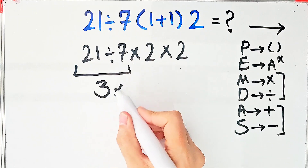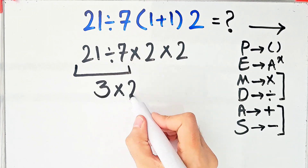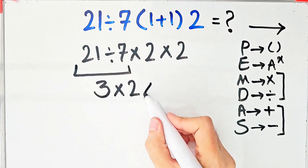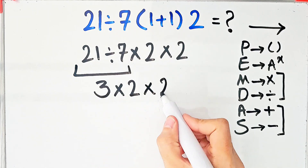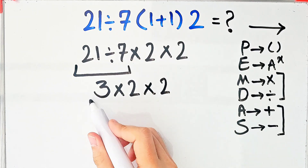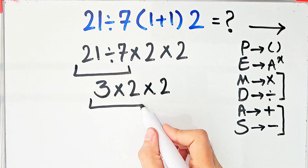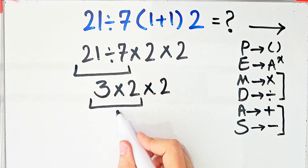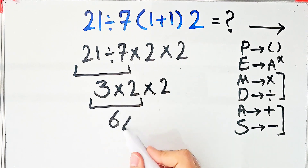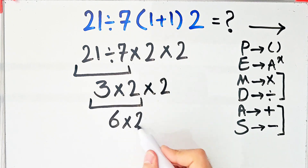Now we have 3 times 2, then times 2. 3 times 2 equals 6, and 6 times 2 equals 12.